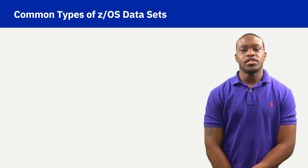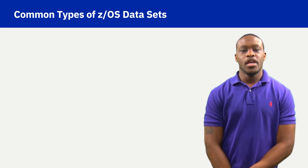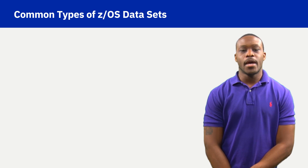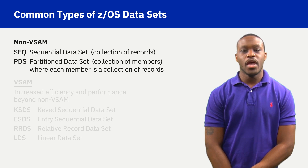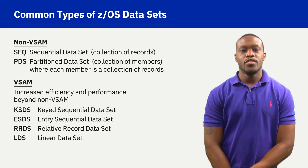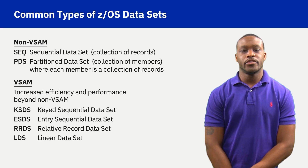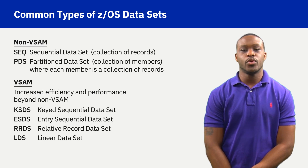Learning ZOS includes an understanding of the different types of datasets. Each of the ZOS dataset types have unique characteristics. The most common types of ZOS datasets fall into two categories: non-VSAM and VSAM. The ZOS introduction video series will include short videos exploring sequential datasets, partition datasets, and VSAM datasets.